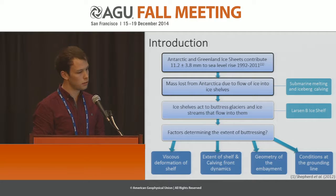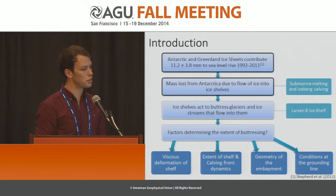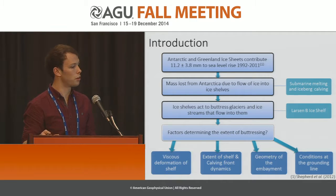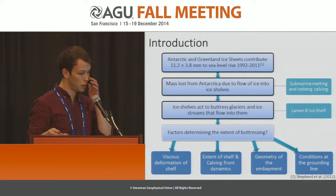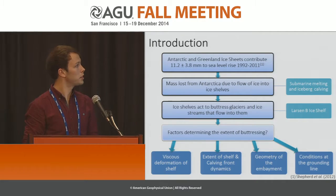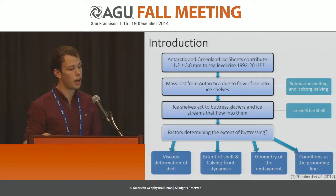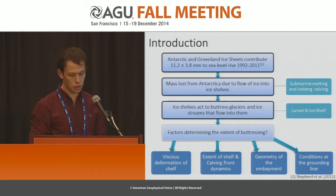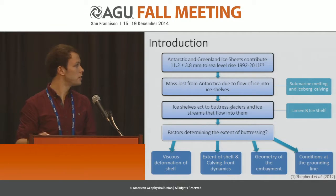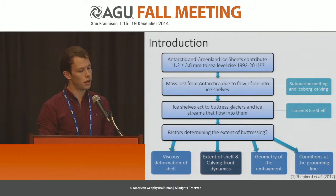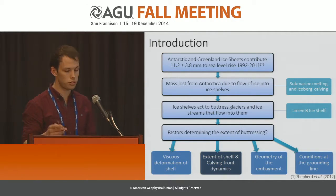These ice shelves act to buttress the glaciers and ice streams that flow into them, and in response can reduce the discharge rate from the grounded ice. This is seen in the collapse of the Larsen B ice shelf, where after the collapse the glaciers and ice streams flowing into the former shelf sped up. There are many factors which may determine the extent of this buttressing, and the one we shall focus on today is the extent of the ice shelf and the calving front flow dynamics.